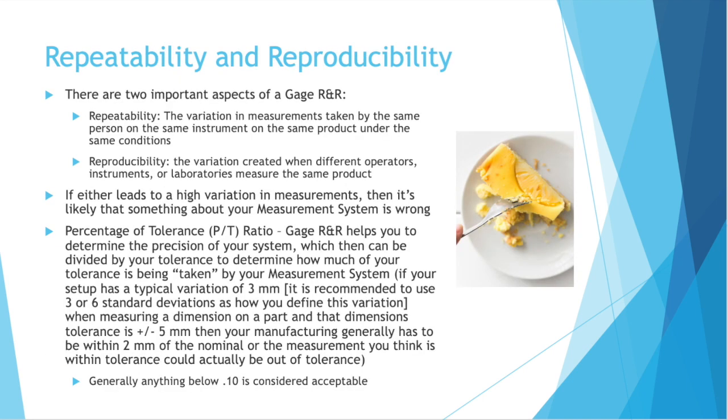Again, the two important aspects of gauge R&R are repeatability and reproducibility. Repeatability is the variation in measurements taken by the same person on the same instrument, on the same product, under the same conditions. Everything repeats. How much variation is in that?